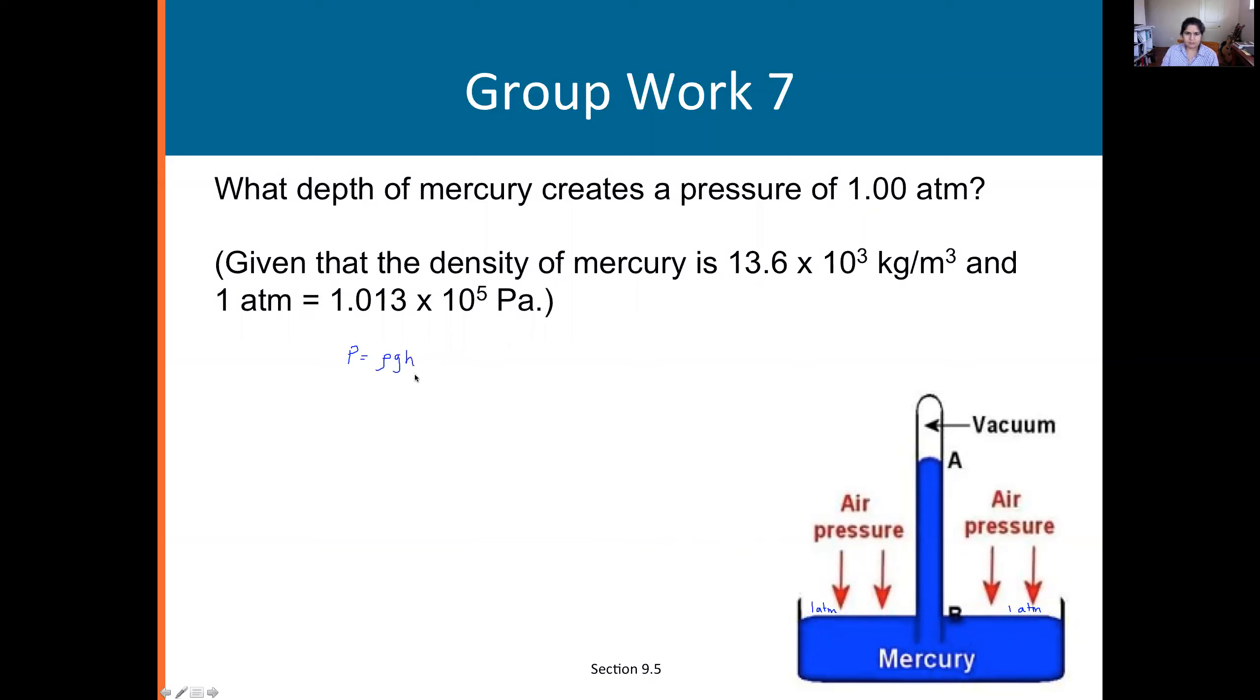We're being asked for what depth of mercury, so I'm going to solve for h equals pressure divided by ρ times g. Be careful not to confuse the symbols, this is the density ρ and in the numerator we have pressure. You need to be in MKS SI units, so take the value in Pascals for pressure.